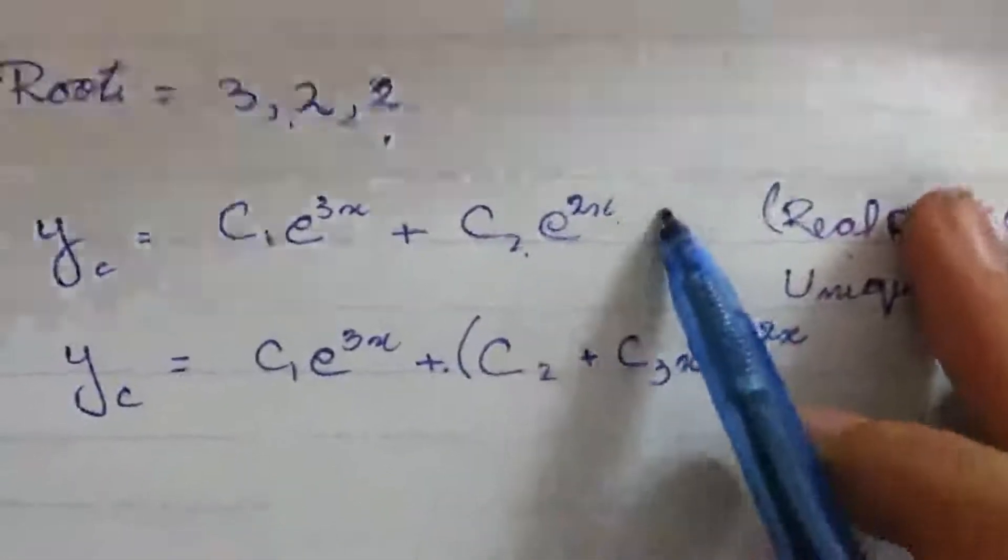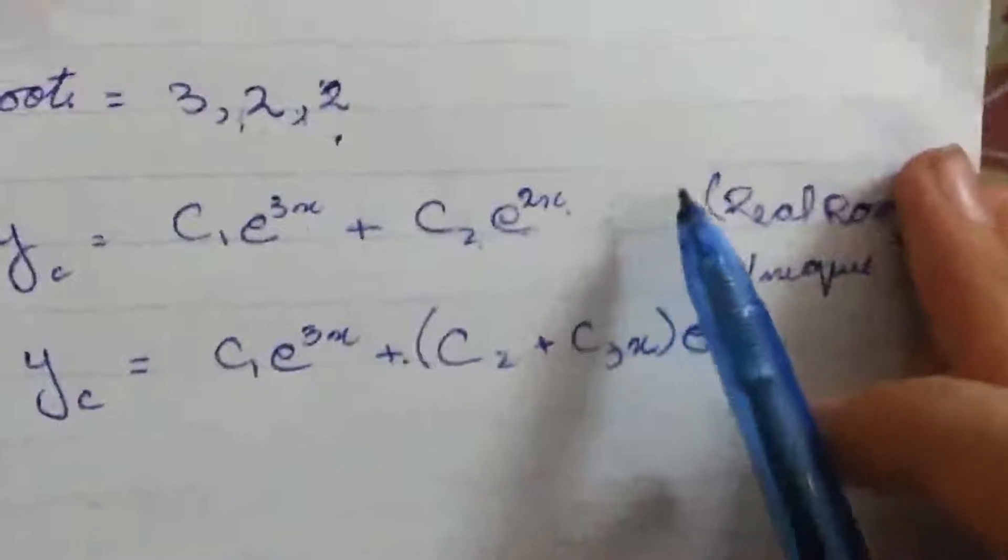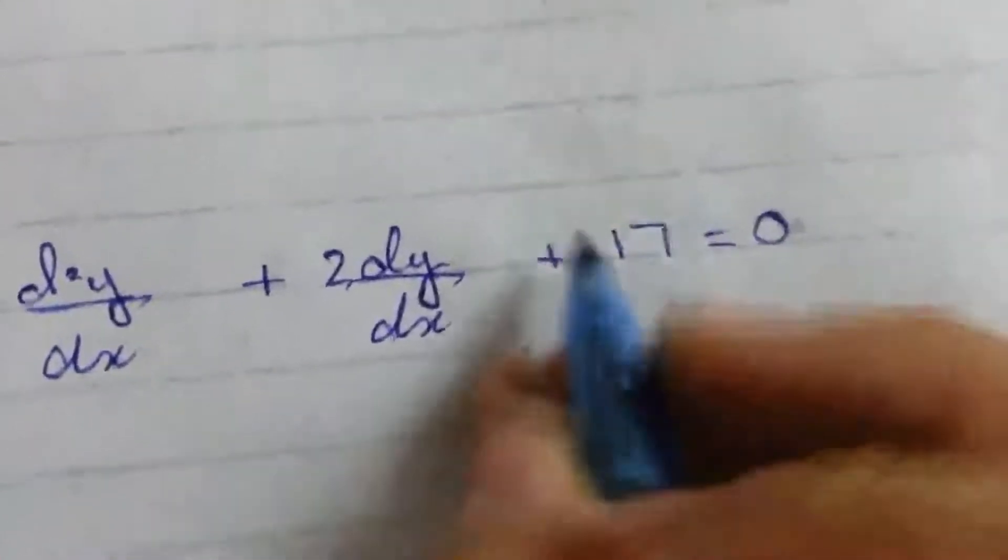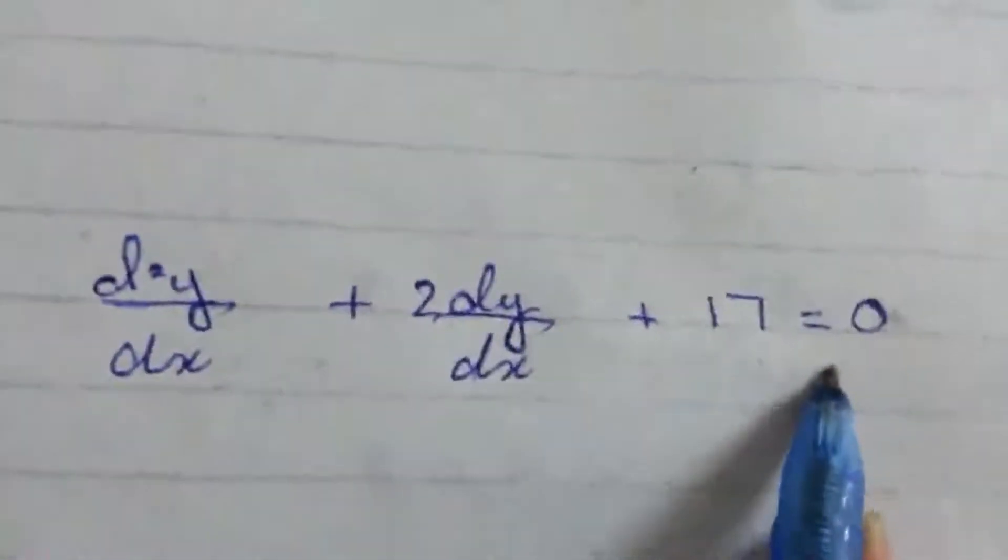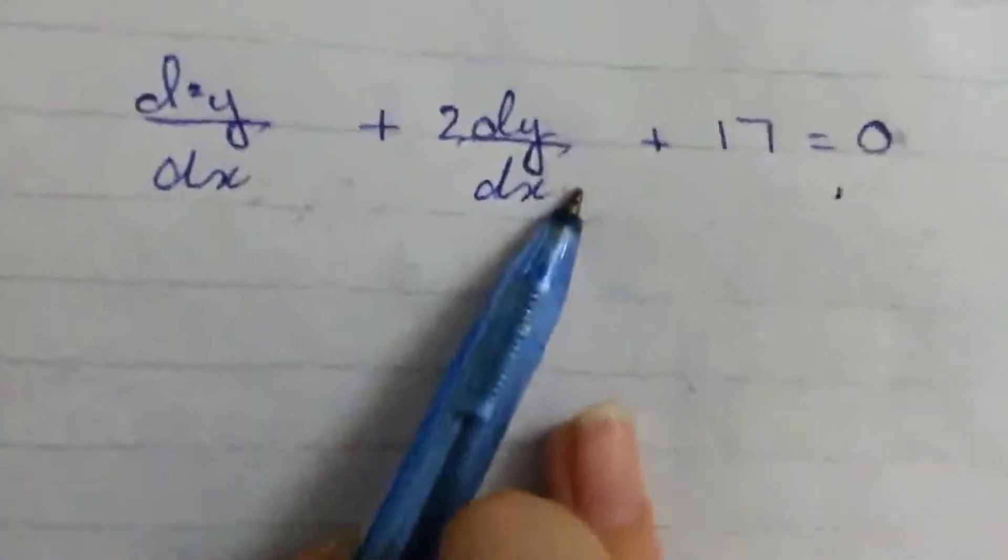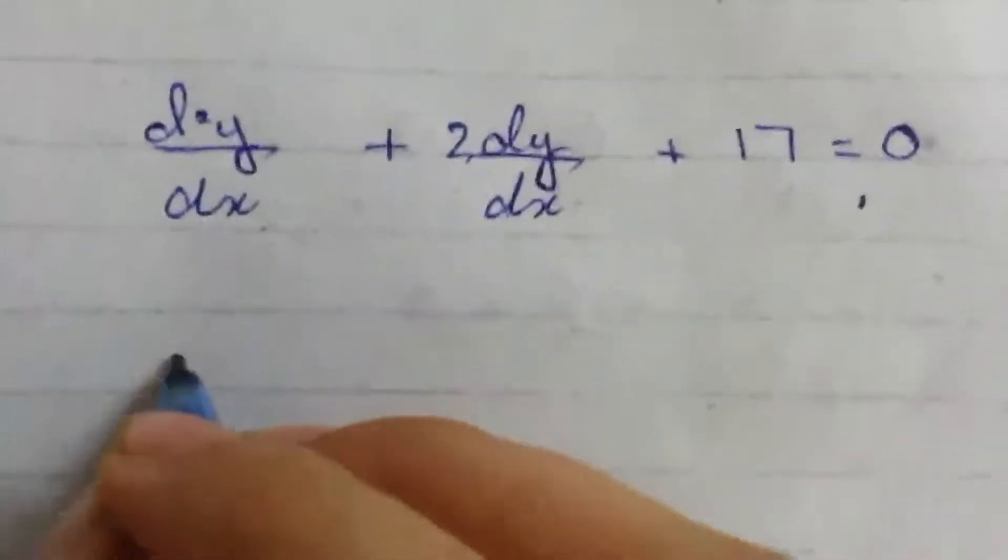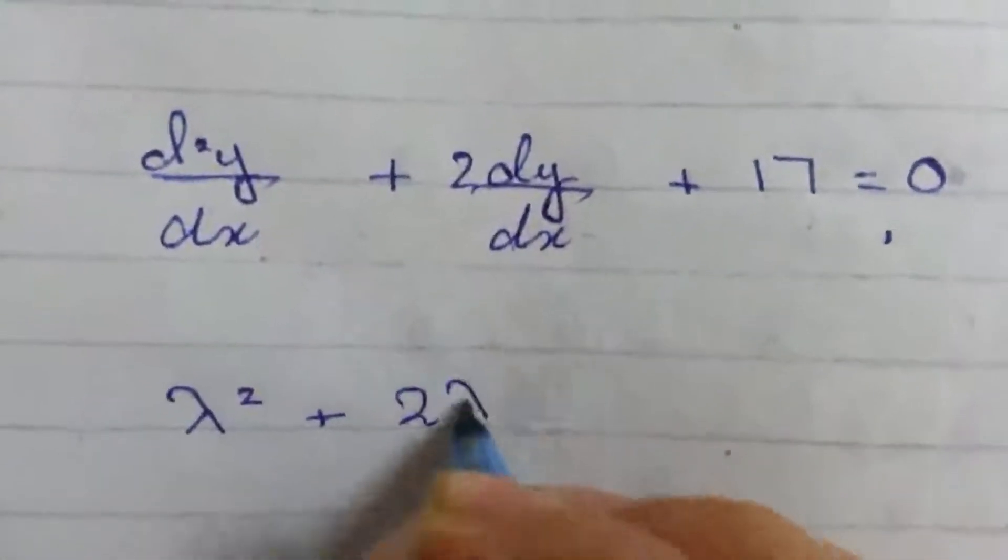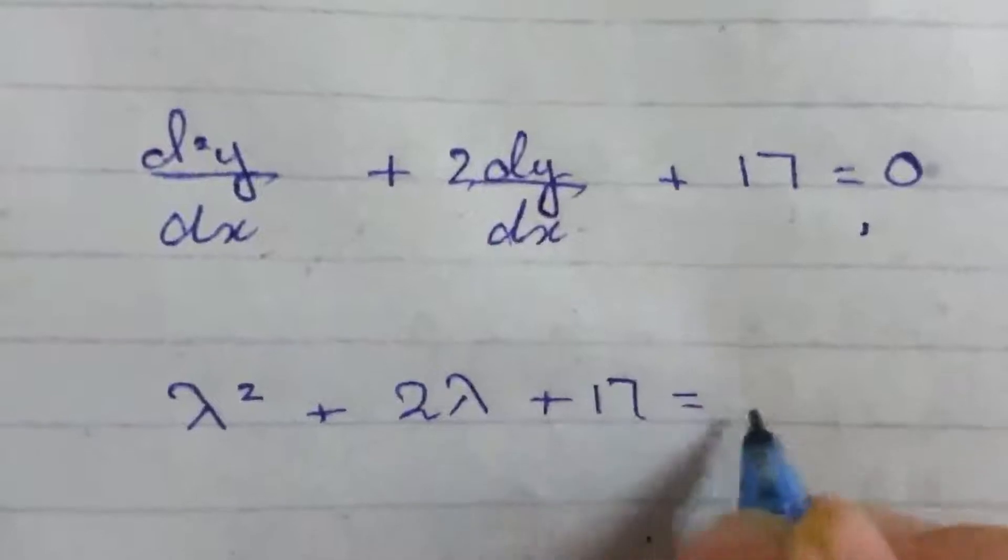This is the case for real but distinct or unique roots. Now we will learn the third form, for which we will consider the question d²y/dx² plus 2dy/dx plus 17 equals 0. We will learn through this question the third form, or the complex root. We will convert this into auxiliary form: λ² plus 2λ plus 17 equals 0.